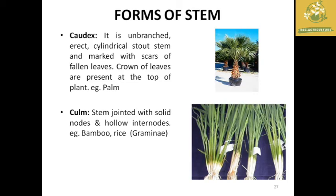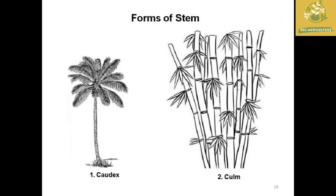Different forms of stem include: caudex — unbranched, cylindrical, with scars of fallen leaves and a crown of leaves at the top; example: palm. Culm — has solid nodes with hollow internodes; examples: bamboo and rice.